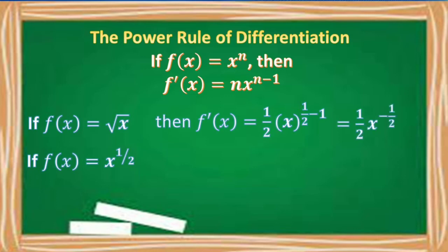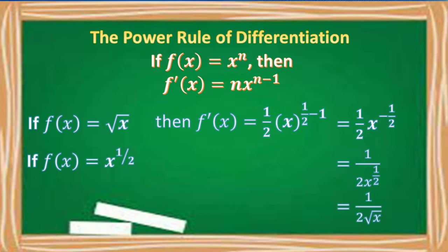This is equal to 1 half x raised to negative 1 half. To change the negative exponent to a positive exponent, we move x raised to negative 1 half to the denominator, giving us 1 divided by 2x raised to 1 half. For our final answer, we convert the exponential form back to radical form: 1 over 2 times the square root of x.